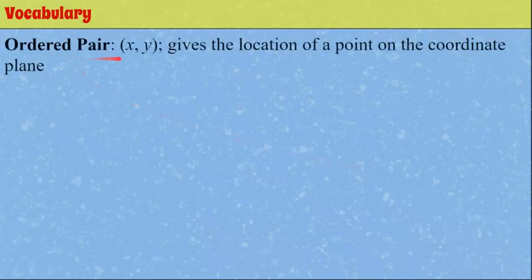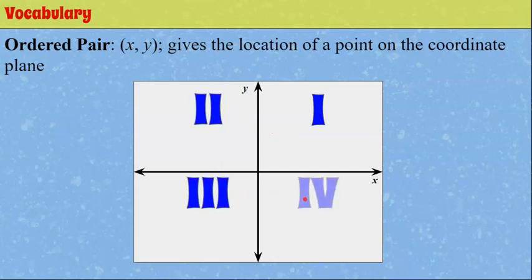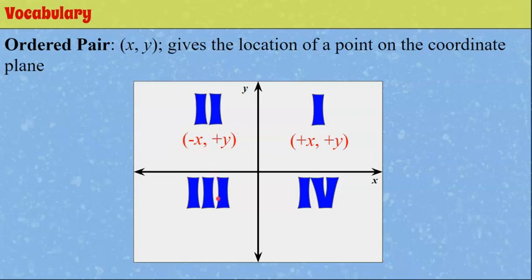Now let's talk about an ordered pair, or a point — this gives the location of the point on the coordinate plane. We have our x-axis (horizontal) and y-axis (vertical) intersecting at the origin. Any ordered pair in quadrant one is positive, positive. In quadrant two: negative x, positive y. In quadrant three: both coordinates are negative. In quadrant four: positive x, negative y.